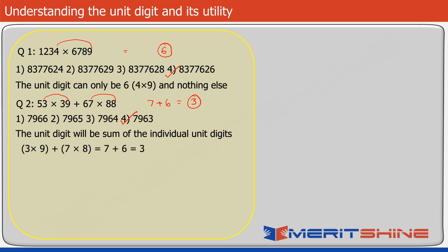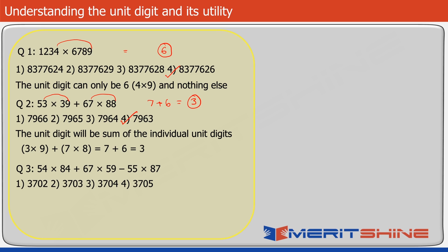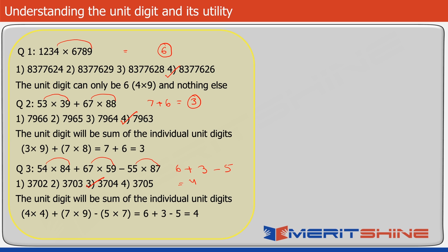Now try this question. Here are your options — I've inserted one more mathematical operation. The process is the same: 4 into 4 is 16, giving unit digit 6. 9 sevens are 63, giving 3. 7 fives are 35, but with a minus, so 9 minus 5 gives 4. Hence the answer has to be option 3. Here we have learned the concept of unit digit — it is very simple yet very useful.